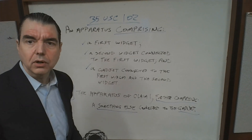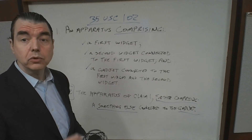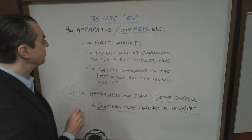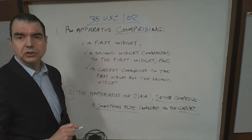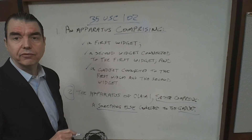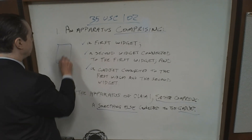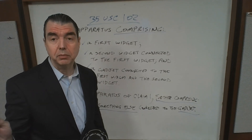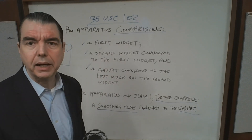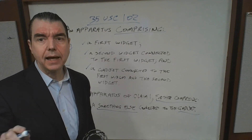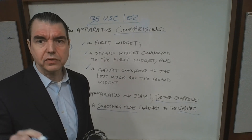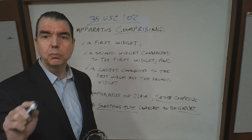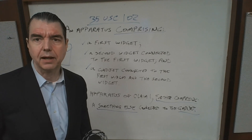For the examiner to be able to make a 102 novelty rejection against your independent claim, the patent examiner has to find all limitations in a prior art reference. It doesn't have to be a patent — it can be a patent application publication, a technical paper, or a catalog. It can be anything that shows the limitations of your invention and that has a date prior to your filing date.